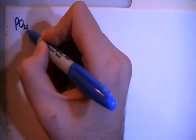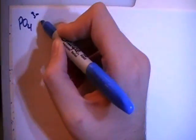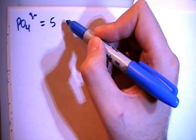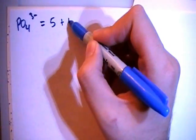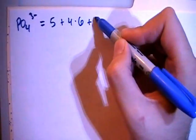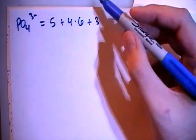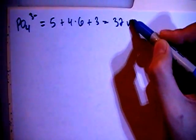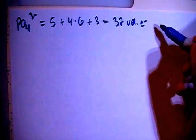The phosphate ion has got PO₄ with a minus 3 charge, which is going to give us 5 valence electrons from the phosphorus plus 4 oxygens, each with 6 valence electrons, plus 3 more electrons because of the minus 3 charge, for a total of 32 valence electrons.